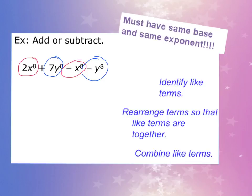Let's combine the red terms, and we have x^8, right? There is an invisible 1 here, so if I have 2 and I take away 1, I would have 1 left, and this is 1x^8. For the blue terms, we are going to take 7y^8 and subtract 1y^8, and we would have 6y^8 left.